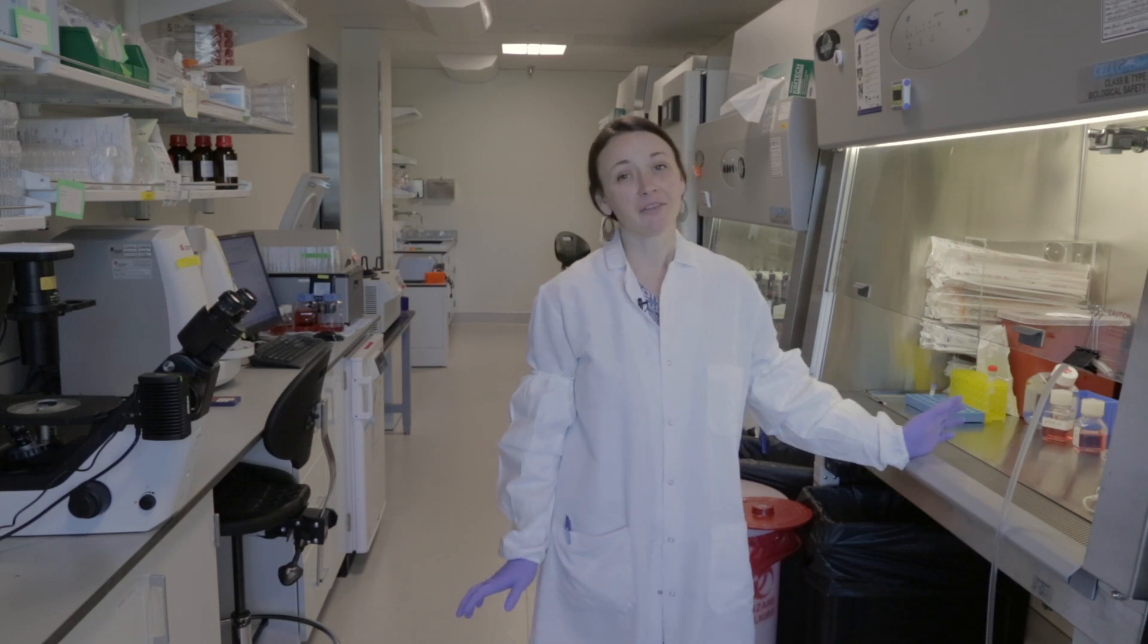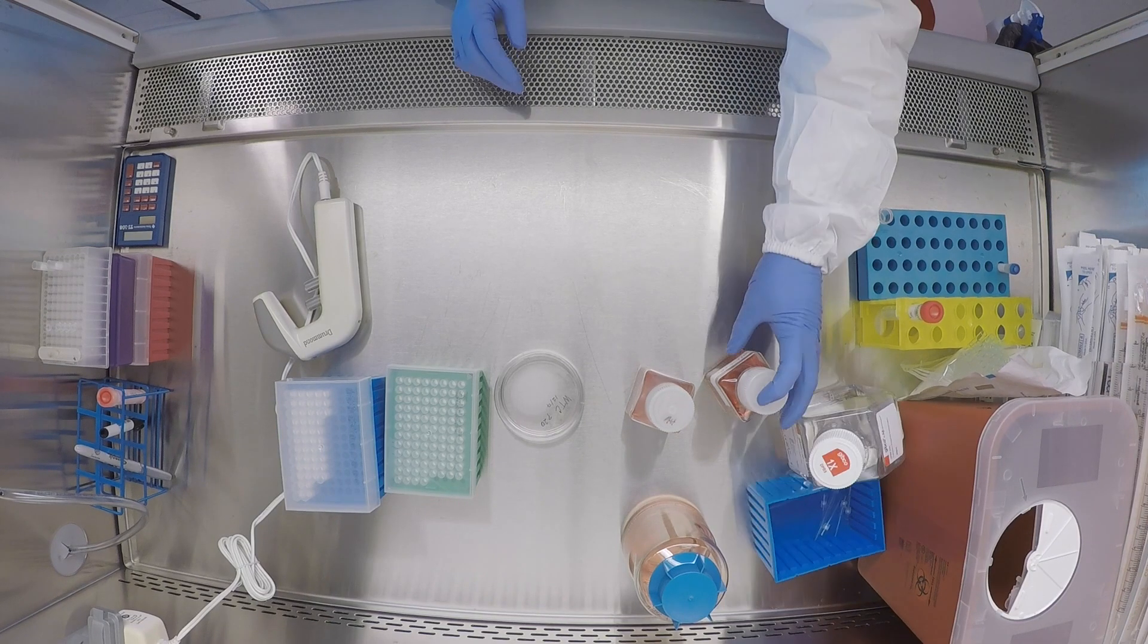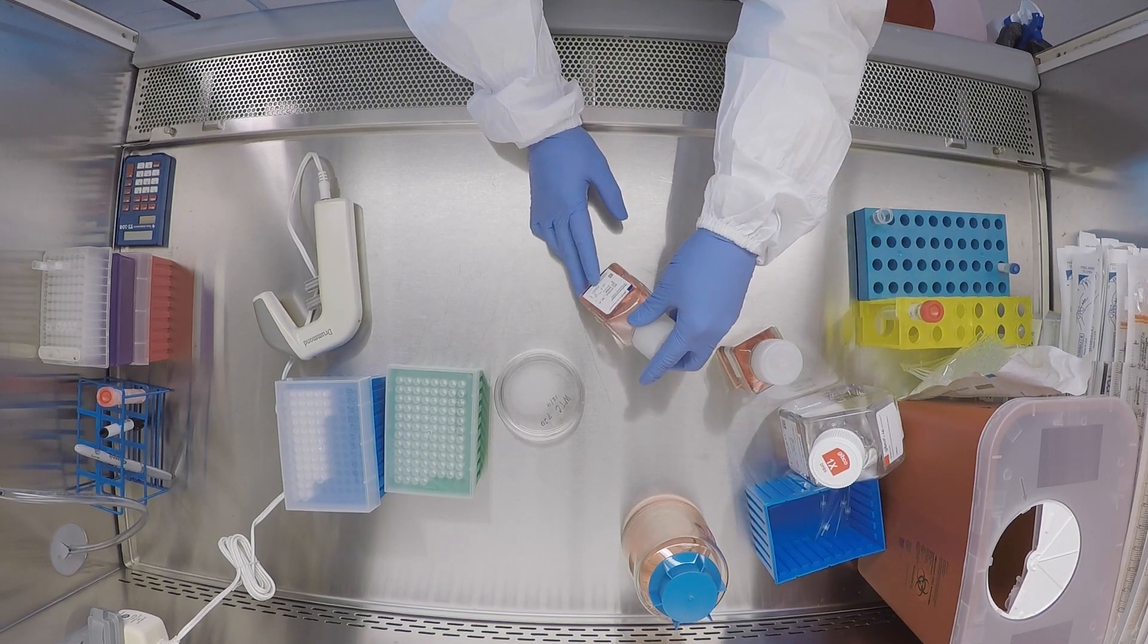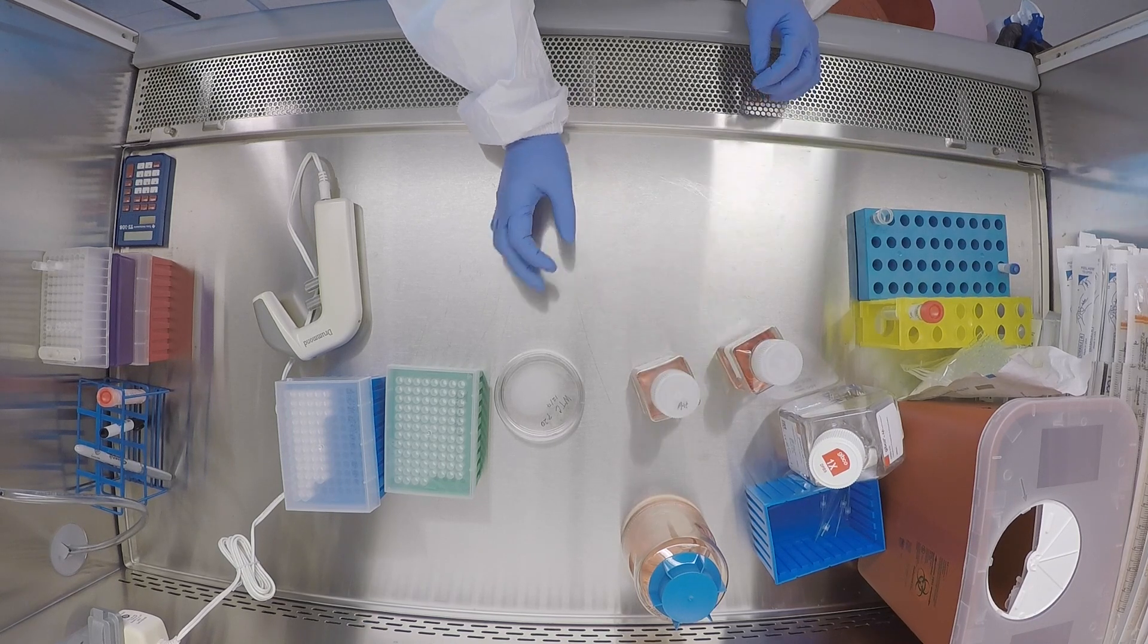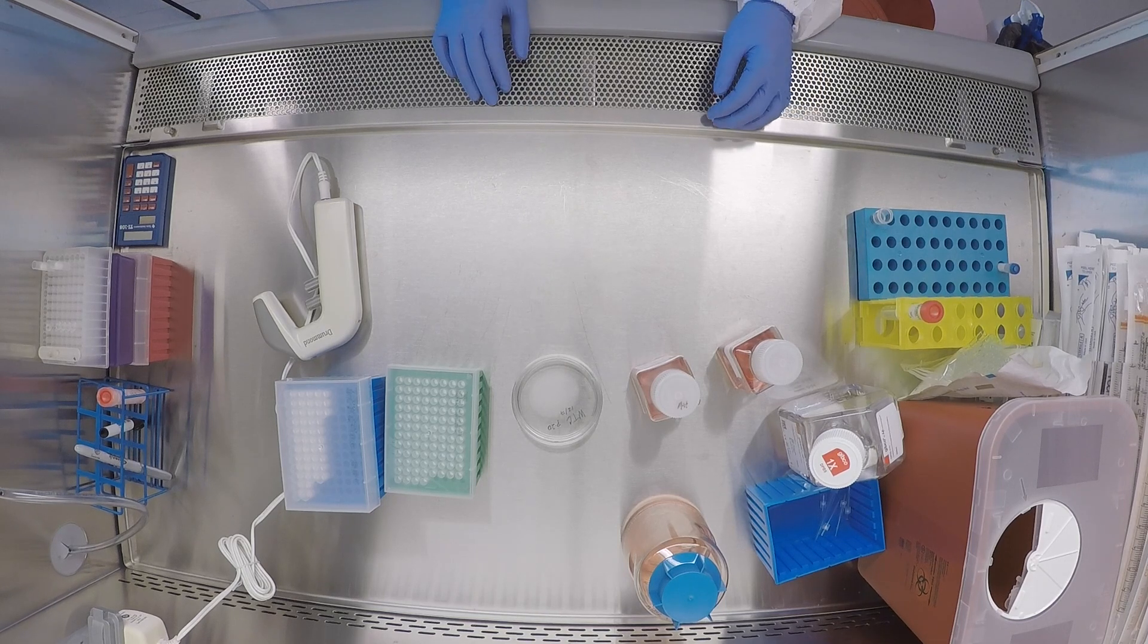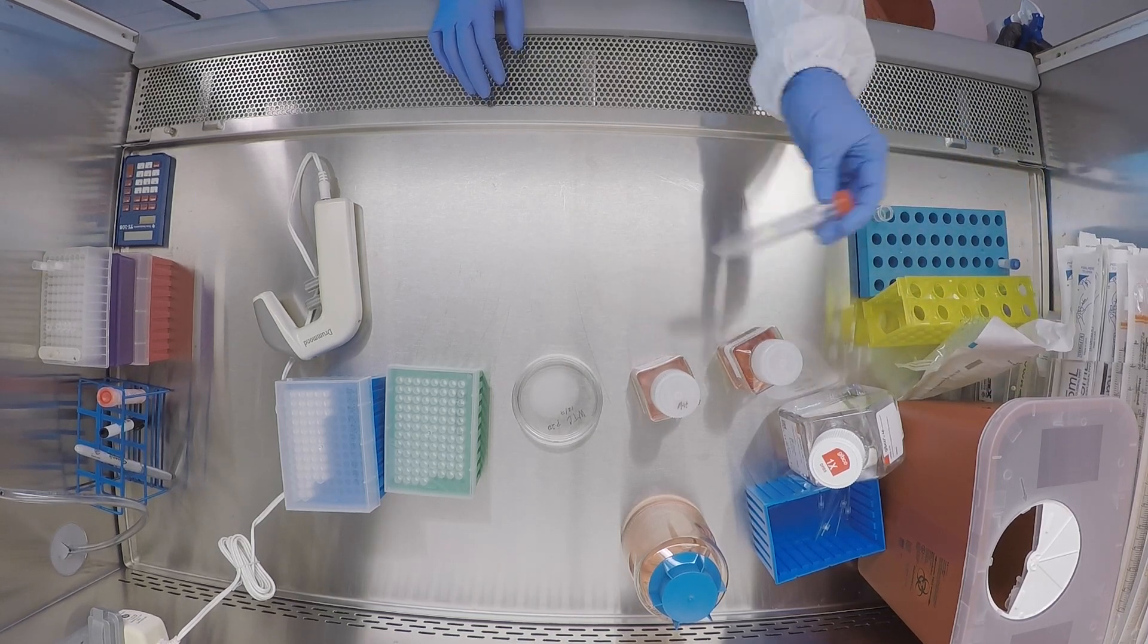First, we want to make sure we have everything ready that we need. Make sure you have your M-Teaser media with your ROC inhibitor already added, Accutase warm to 37 degrees, a Matrigel plate ready to go at room temperature, and a conical ready for our cells.